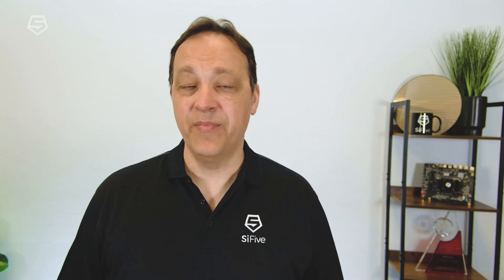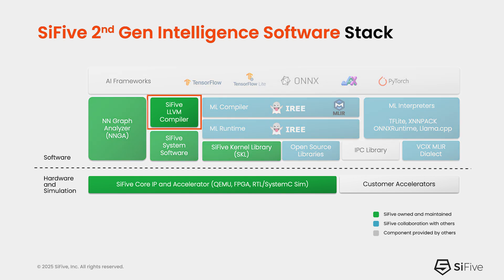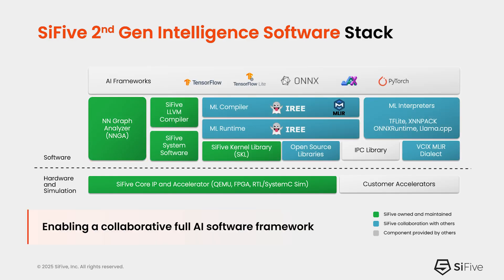We support our AI hardware products with a very comprehensive software stack for mapping AI models. The tooling allows you to take AI models and map them down to either a bare-metal runtime environment or a Linux runtime environment running on our cores. You can optimize layers using the vectorizer in the LLM compiler, or by linking in our very high-performance hand-tuned SKL kernel libraries that provide key functions at very high throughput on our cores. We also have a high-level analyzer that lets people look at the model and analyze it to identify performance hotspots when running on our hardware, plus integration with existing open-source software stacks to leverage industry-standard frameworks to map models onto Sci-5 hardware.